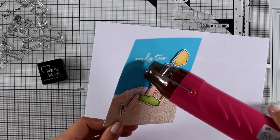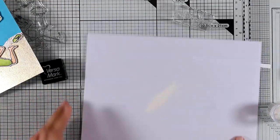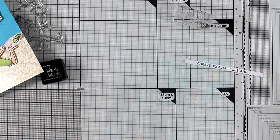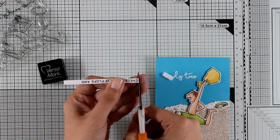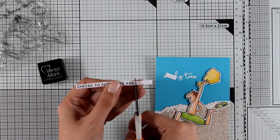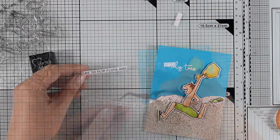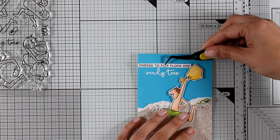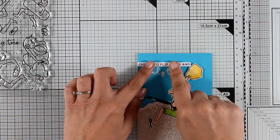I have already prepared another piece of sentiment from the same stamp set that says 'Cheers to Flip-Flops,' which I am going to cut to size and stick it on top of the sentiment Sandy Toes. So the whole thing reads 'Cheers to Flip-Flops and Sandy Toes.'